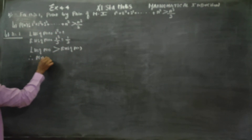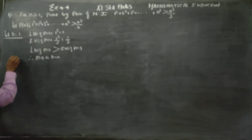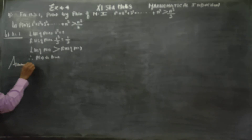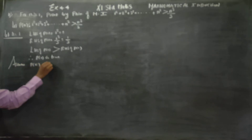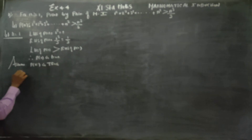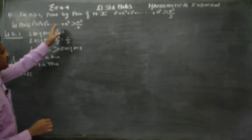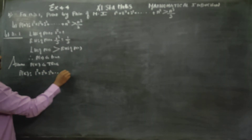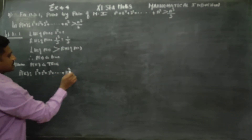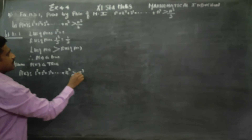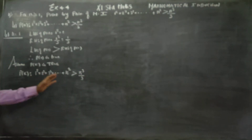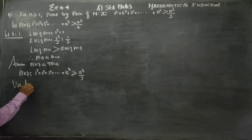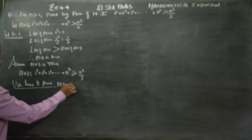What is the meaning of P of k is true? We assume P(k) to be true: 1 squared plus 2 squared plus 3 squared dot dot dot plus k squared is greater than k cubed by 3. If we assume this to be true, the answer is greater than k cubed by 3. We have to prove P of k plus 1 is true.